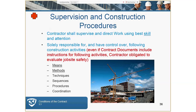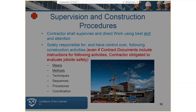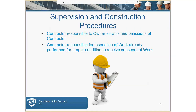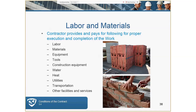The contractor shall supervise and direct the work using the best skill and attention, and is responsible for maintaining job site safety. The contractor is responsible to the owner for acts and omissions of the contractor and for inspection of work already performed or in proper condition to receive subsequent work. The contractor is required to pay for the cost of performing the work including all listed elements. Note that water, heat, and utilities are generally temporary during the course of the work; once the owner accepts the building, these may become the owner's responsibility.